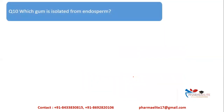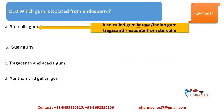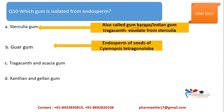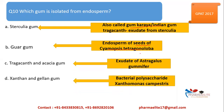The last and tenth question: which gum is isolated from endosperm? Options are Gum karaya (also known as Indian gum or sterculia gum, obtained as an exudate from Sterculia), Guar gum (obtained from endosperm of seeds of Cyamopsis tetragonoloba), Tragacanth (exudate from Astragalus gummifer), Acacia (exudate), and Xanthan gum (from bacterial polysaccharide Xanthomonas campestris). The only one obtained from endosperm is Guar gum — option B.